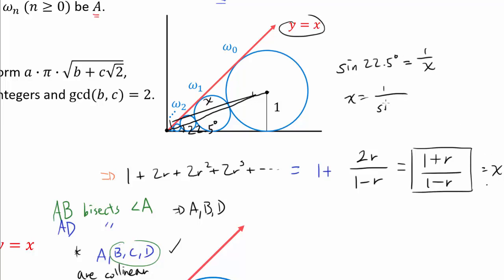And we can evaluate sine of 22.5 by using a half angle formula. We know sine of θ over 2 is plus or minus square root of (1 minus cosine of θ) over 2. And in this case, we know sine is going to be positive.